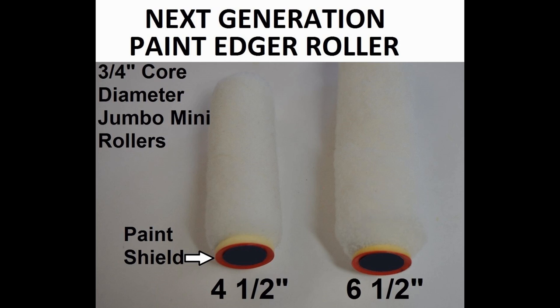Our 3/4 inch core outperforms the half inch core and will become the prime seller. They are available in 4 and a half and 6 and a half inch lengths.